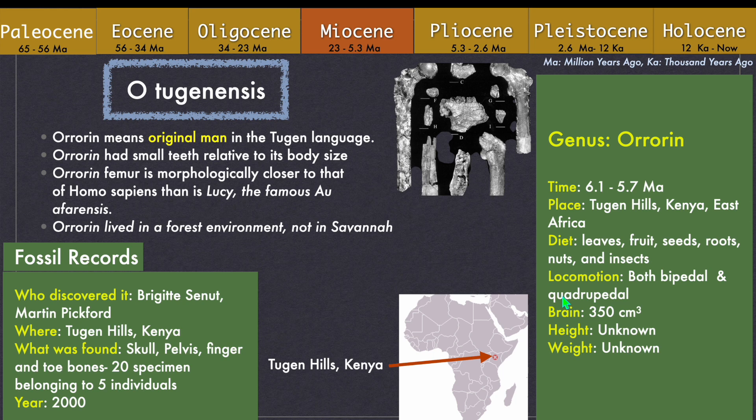Tuganensis had small teeth relative to their body size. Interestingly, they existed 200,000 years earlier than Australopithecus afarensis, yet their femur bone has more resemblance to our femur bone. Another interesting fact about Ororin tuganensis is that they lived in a forest environment, not savannah, but still knew bipedal locomotion, though their primary locomotion was quadrupedal.